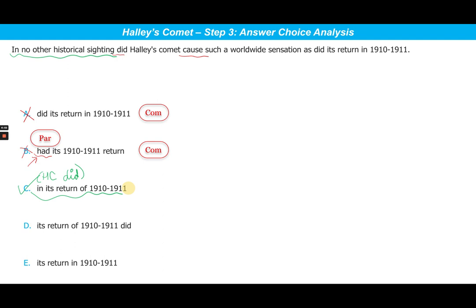Let's take a look at choice D. If you understood that there is a problem in choice A, you will right away reject choice D, because all it does is change the position of 'did.' In choice A, 'did' appeared at the beginning of the choice; in choice D, it appears at the end. But the meaning conveyed is exactly the same as choice A — it presents an illogical comparison. So choice D is out.